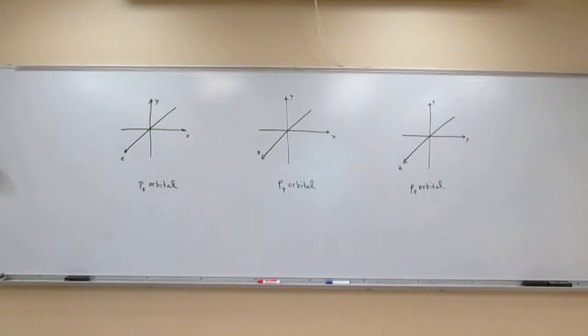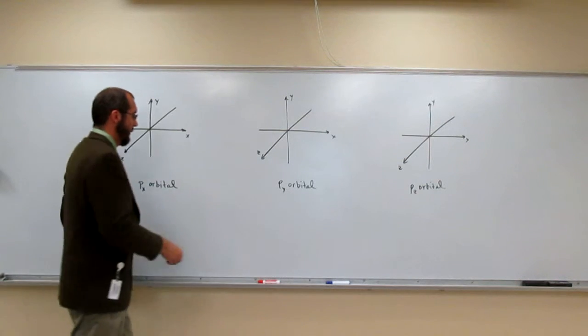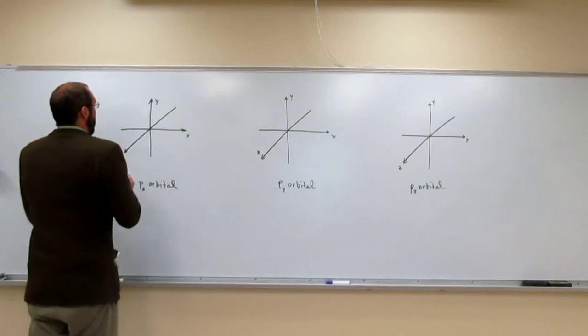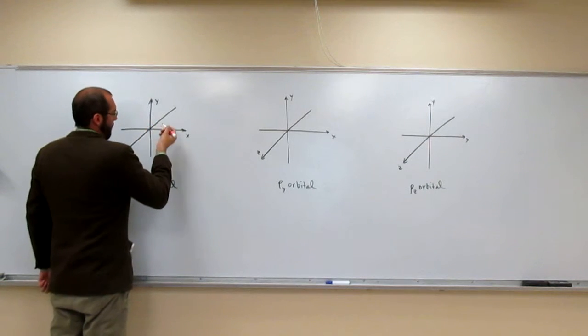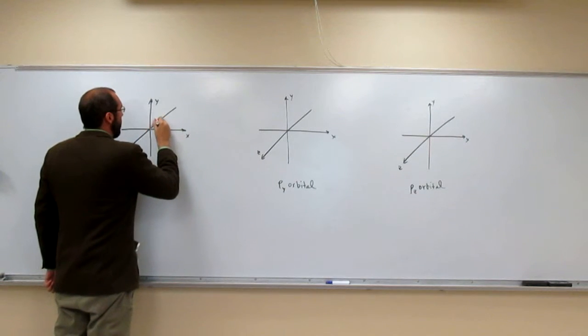So now I'm going to draw the 3p orbitals with their phasing and their nodes on the axes that they're supposed to be on. The px orbital is going to be found on the x-axis, and we'll do the 2p.